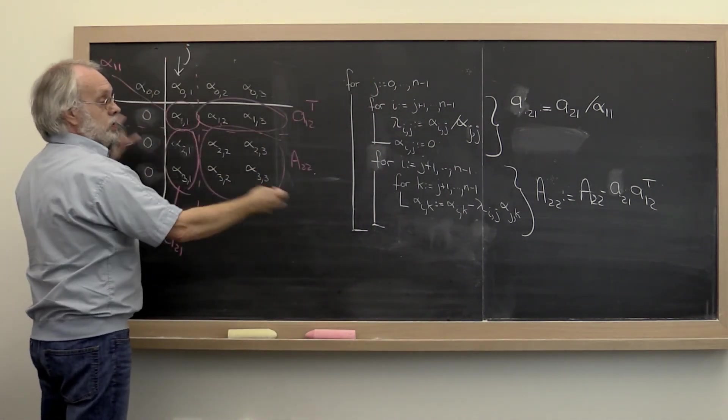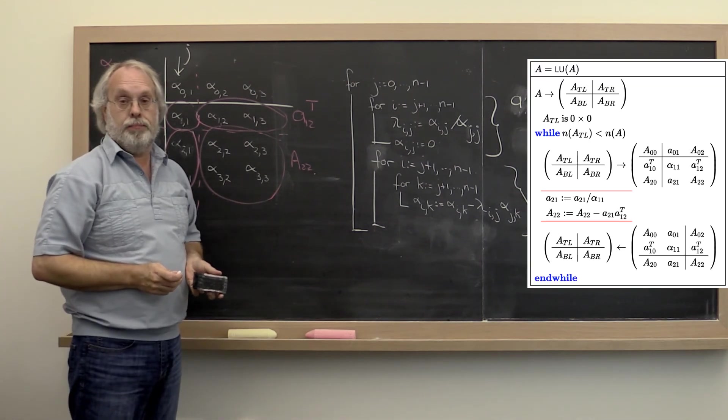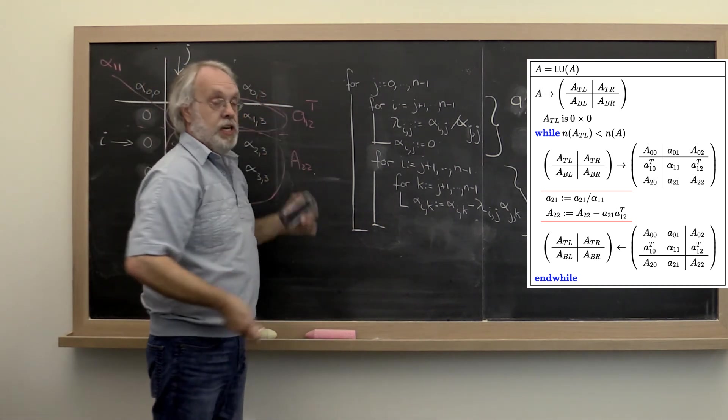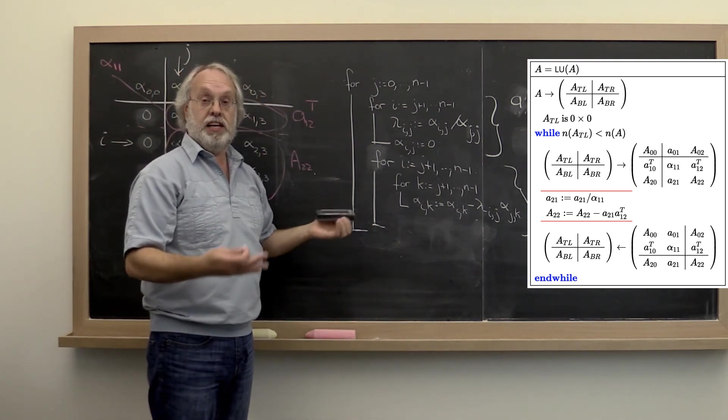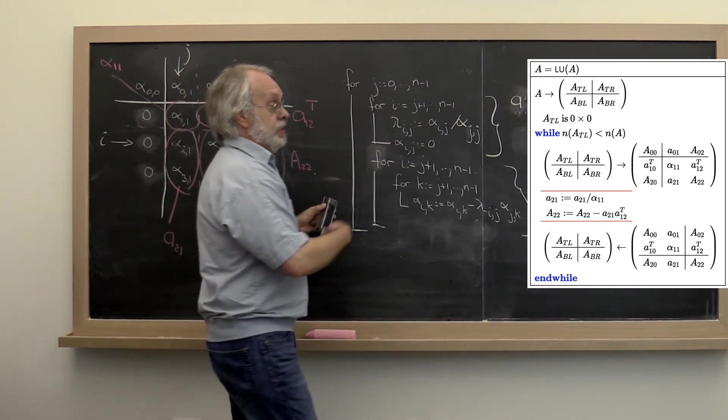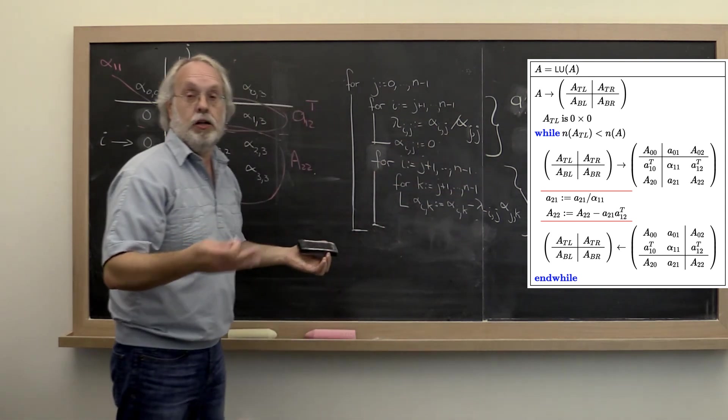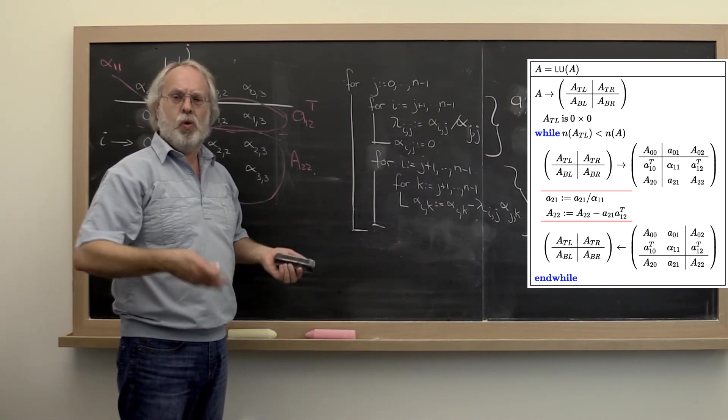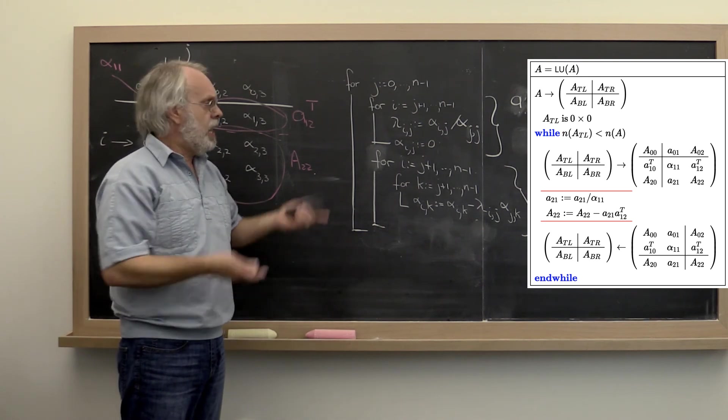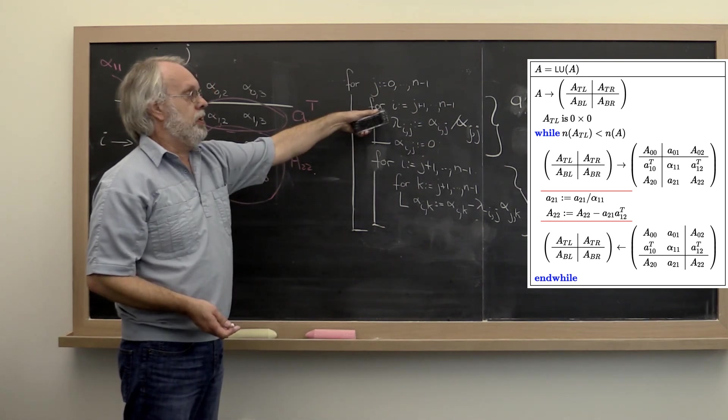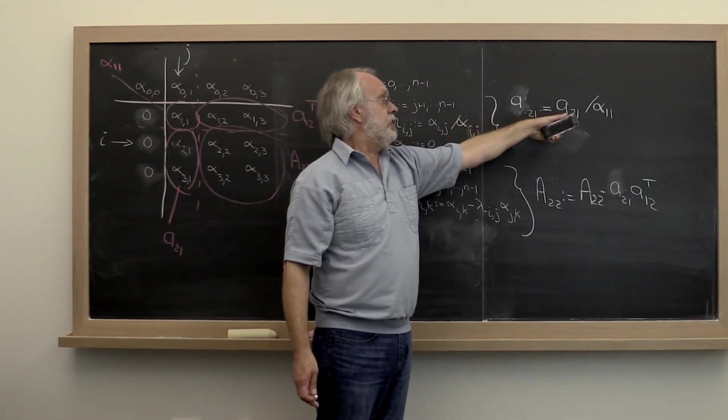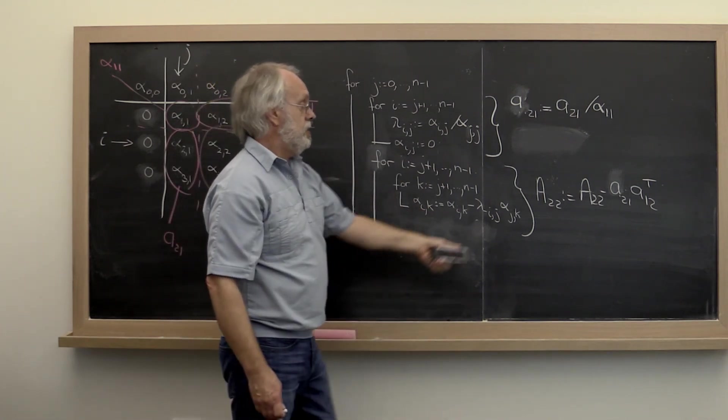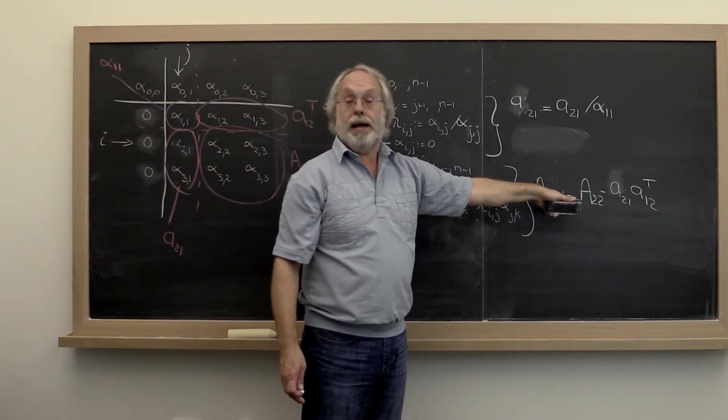What we've done now is we've related a loop that you may have encountered before that exposes a triple nested loop, and we have related this to how we present the algorithm using FLAME notation. Now, the algorithm FLAME notation only has one loop in it. What happened to all these other loops? This loop is hidden in the operation take the vector and divide it by alpha_1,1. And this double nested loop is hidden inside of what we call a rank 1 update.